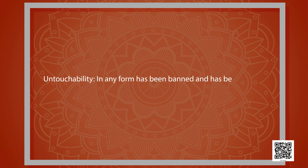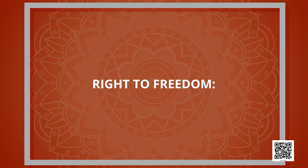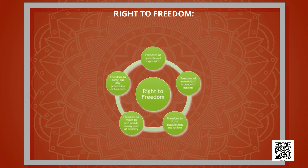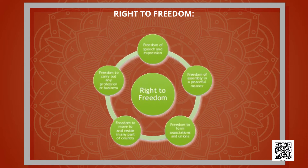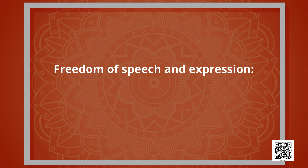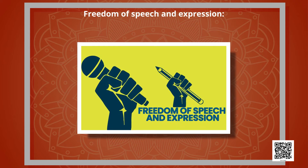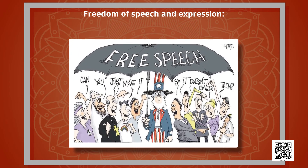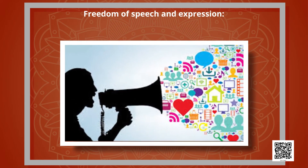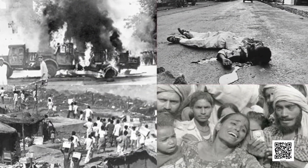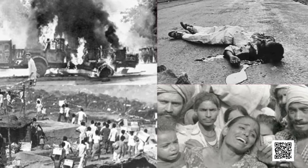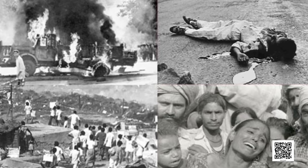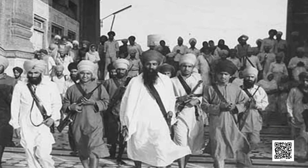Untouchability in any form has been banned and made a punishable offence in India. The next right is the Right to Freedom, which means we can do whatever we want to do without interference from others, especially the government. The Right to Freedom includes: freedom of speech and expression — one of the essential features of democracy. But it comes with certain riders: you cannot express opinions which may incite public hatred and violence, hurt the sentiments of a particular religion or community, incite others to rebel against the country, or defame someone on a false basis.